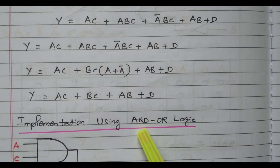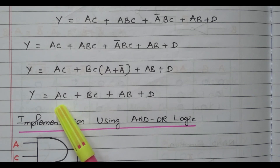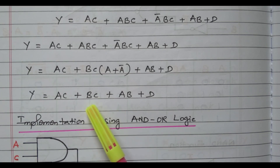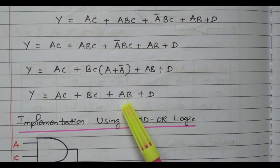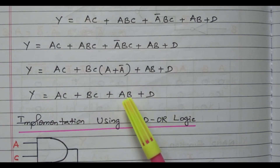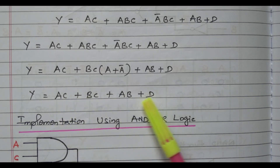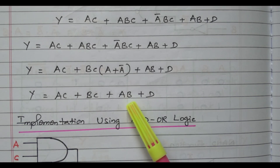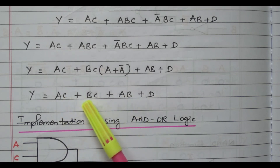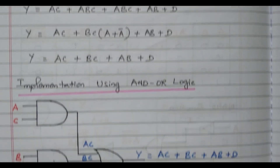In order to implement with AND and OR gates: A and C is multiplied, so we need one AND gate. B and C is multiplied, so we need one AND gate. A and B is there, so we need one AND gate. D is available alone. So we need three AND gates. In order to add all four functions, we need one OR gate — three AND gates and one OR gate.